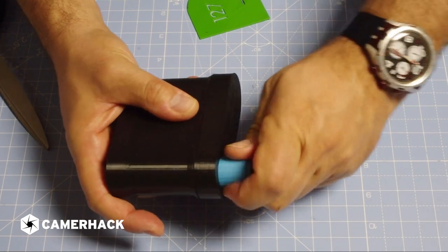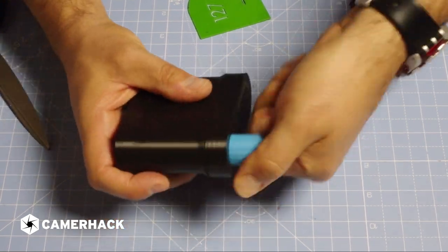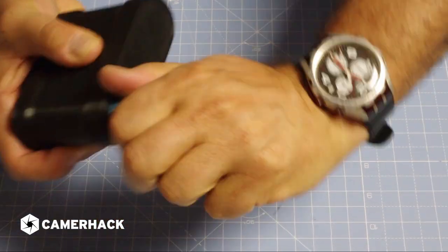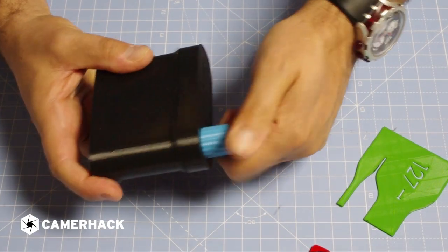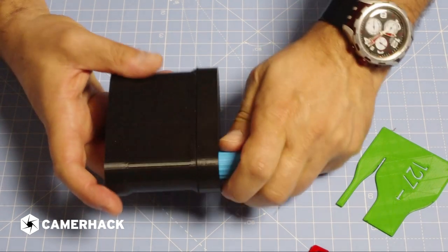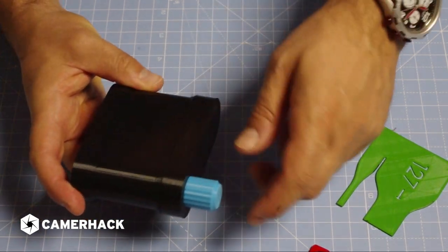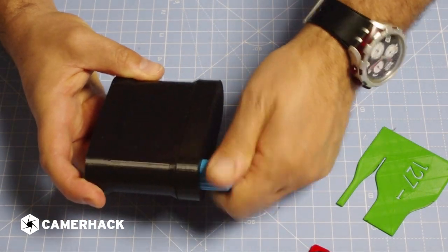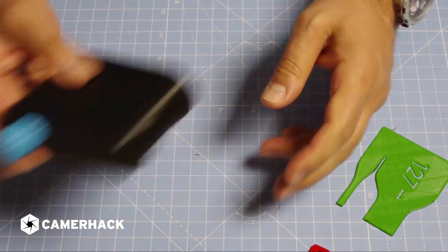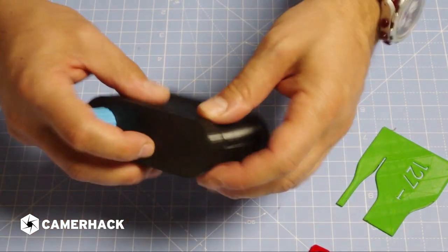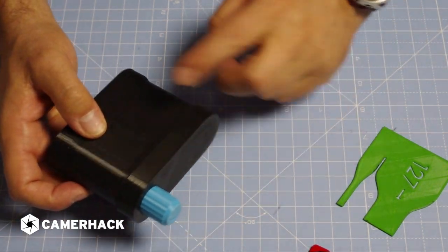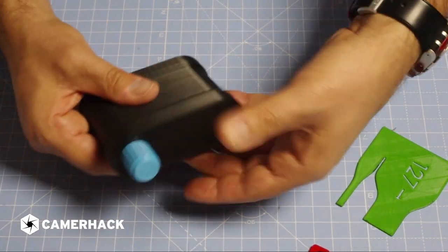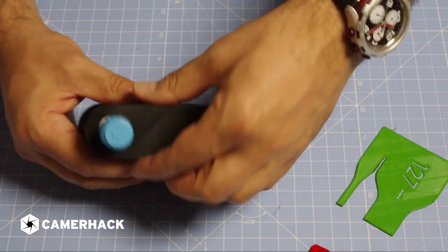And start winding, like this. So when you feel that the rolling becomes easy and when you shake you feel there is a little rumbling inside, it means that the cutting is finished.